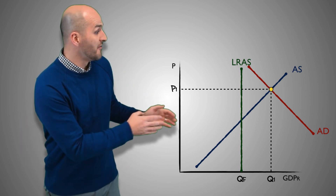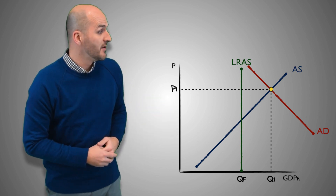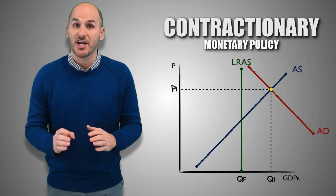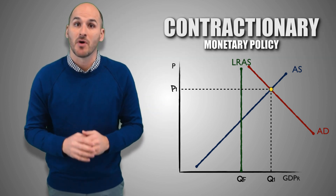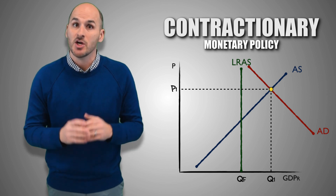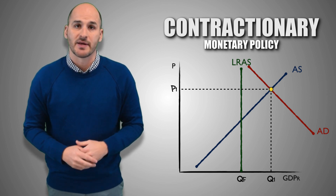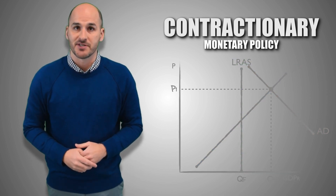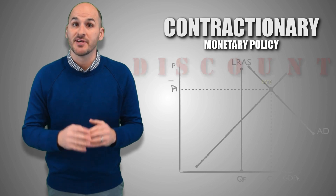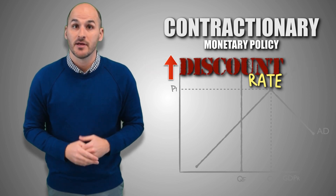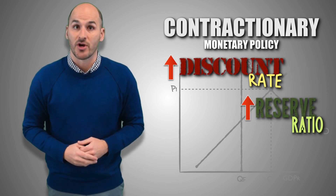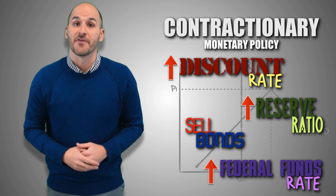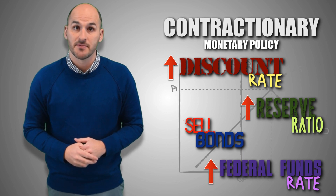When the economy is in an inflationary gap, the Federal Reserve will implement contractionary or tight monetary policy to reduce aggregate demand. The Fed has four policy options: increase the discount rate, increase the reserve ratio, sell bonds in the open market, or increase the federal funds rate.